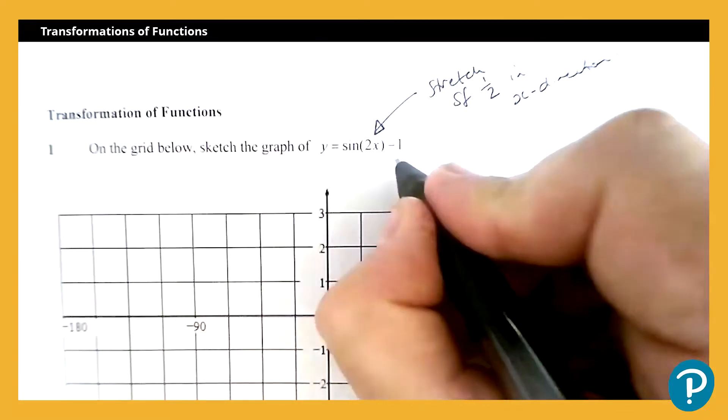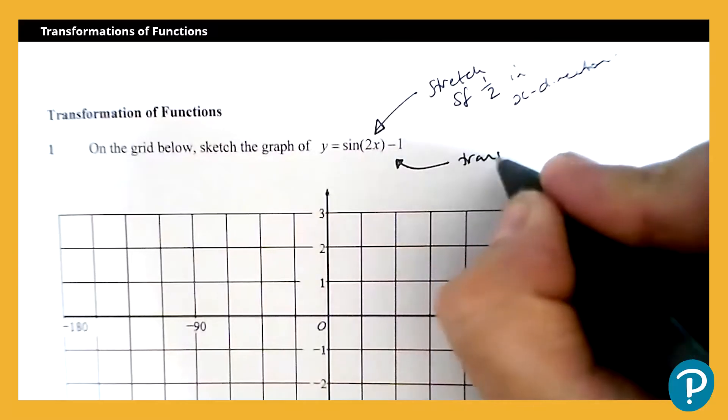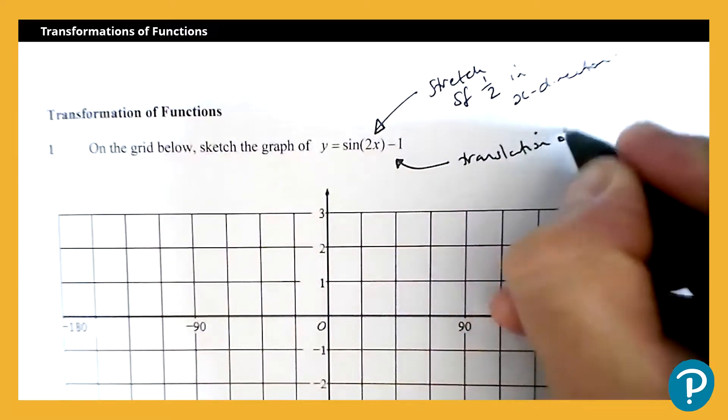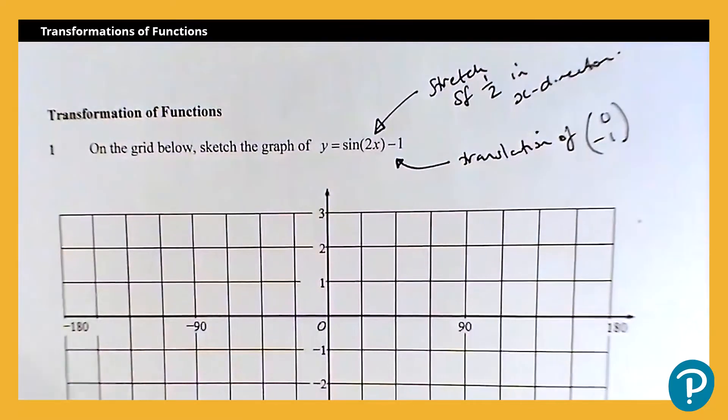And the minus 1 part here, the subtract 1, is a translation of 0, negative 1. So I need to do both of those things.